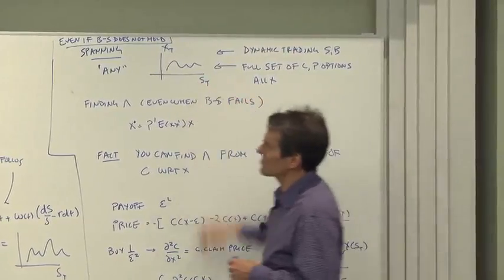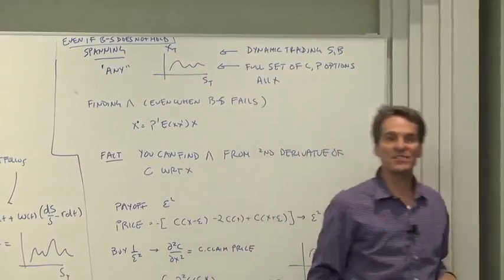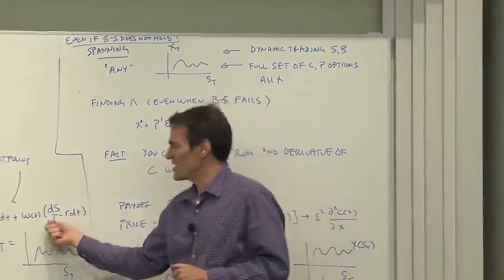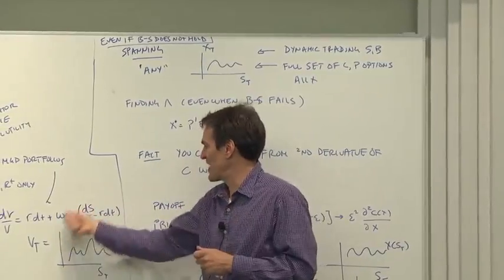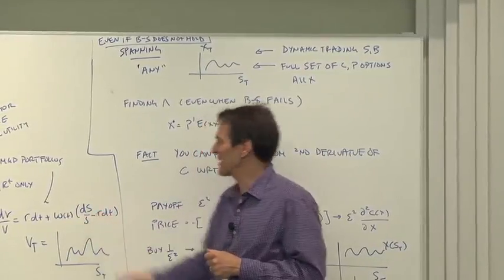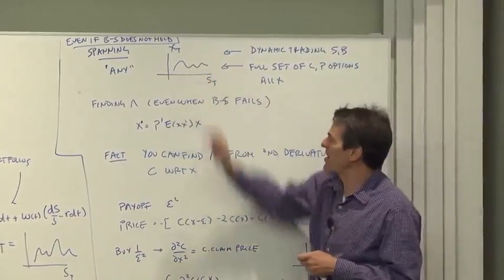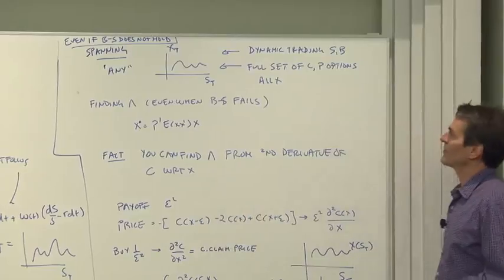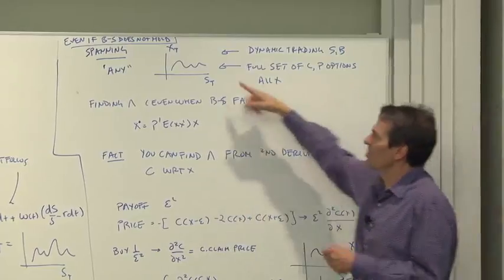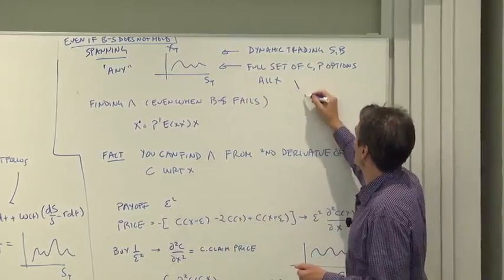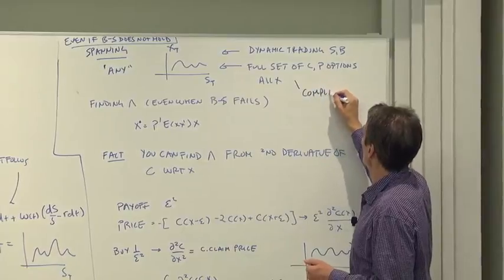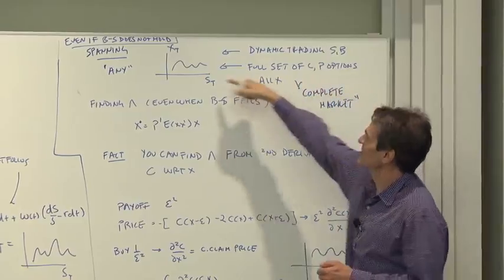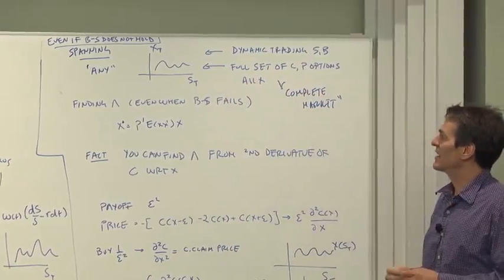Another way you can get to just about any function you want is by mixing put and call options. So there's a lovely spanning result. Two securities that you change the investments in them dynamically gives you the same amount of final payoffs as you can get by all puts and calls with all different strike prices. And those are also equivalent to both of these things being equivalent to what we call complete markets, meaning every contingent claim as a function of the stock price is traded.